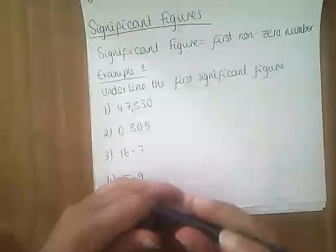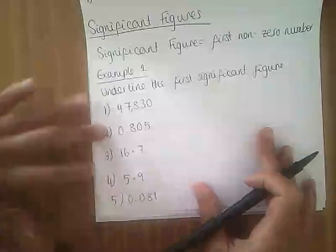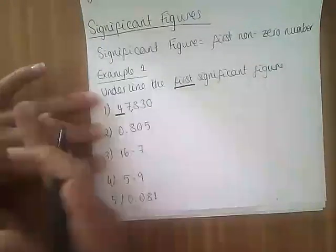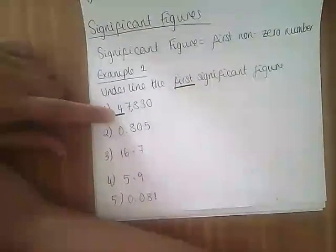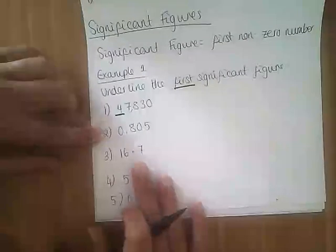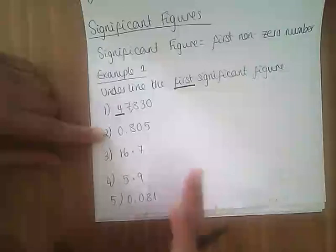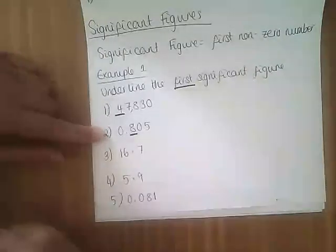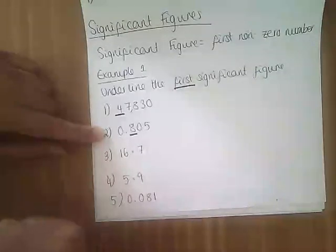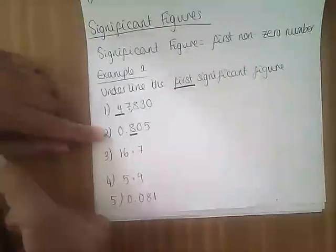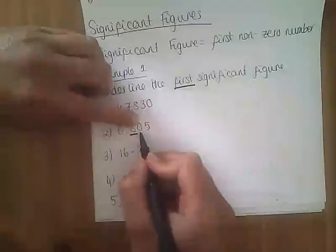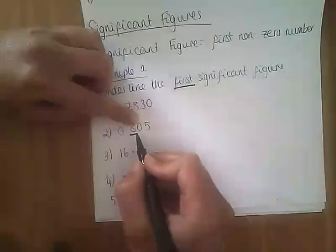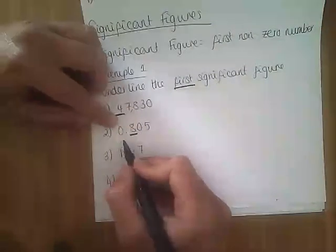Here we've got the number 47,830. Our first significant figure is the first number from the left that is not zero, so that is the four — which in this case represents 40,000. For question two, the first non-zero number is the eight. Please be careful: if zero follows another number, so here the first significant figure is eight and then it's a zero, that zero now counts as a significant figure.